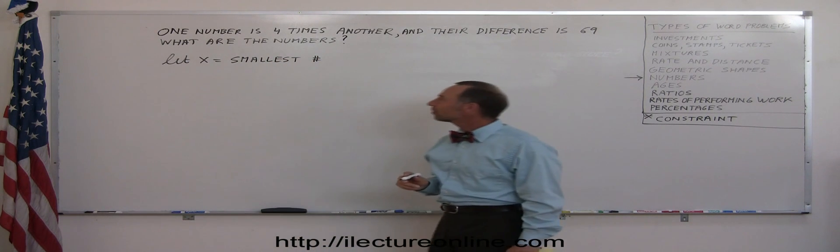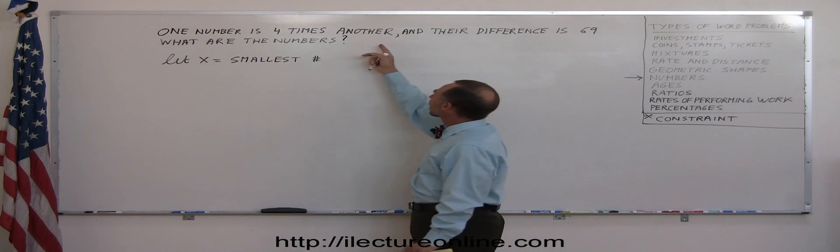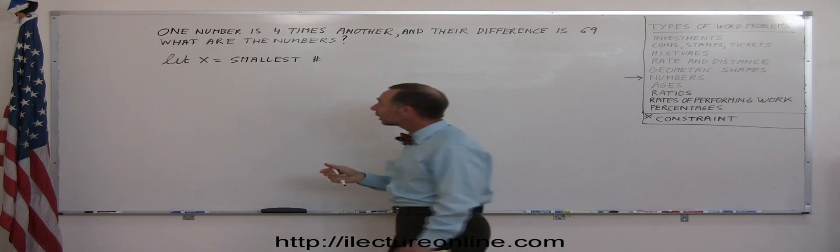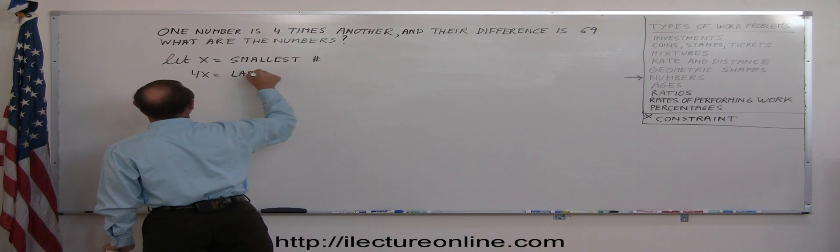So how do we represent the largest of the two? Well, it says that one number is four times the other, so 4x would then represent the larger number. So 4x equal the largest of the two numbers.